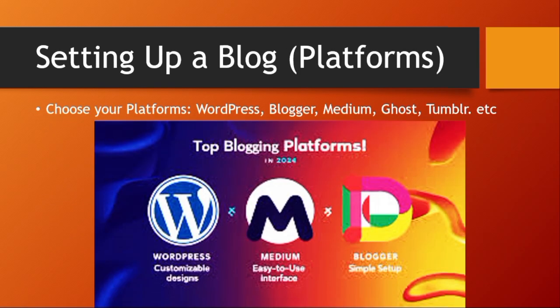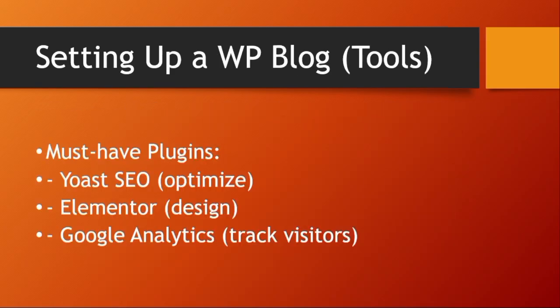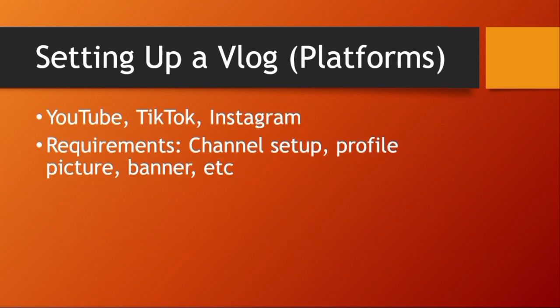Now let's walk through setting up a blog platform. We have Medium, WordPress, and Blogger. We can explore these in more detail later. If you're going to use WordPress, you'll need hosting and a domain. For vlogging, you'll need YouTube, TikTok, or Instagram — and to set up your channel you'll need a proper profile picture and banner, or channel art for YouTube.